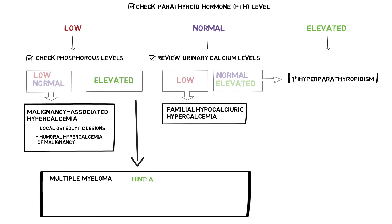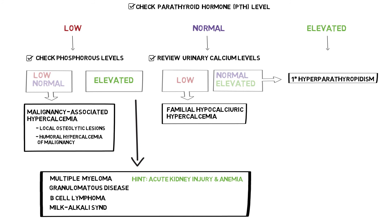Granulomatous disease such as sarcoidosis or tuberculosis, B-cell lymphoma, and milk-alkali syndrome can also present with elevated phosphorus. The clue for milk-alkali syndrome is acute kidney injury and elevated bicarbonate in an otherwise healthy person.